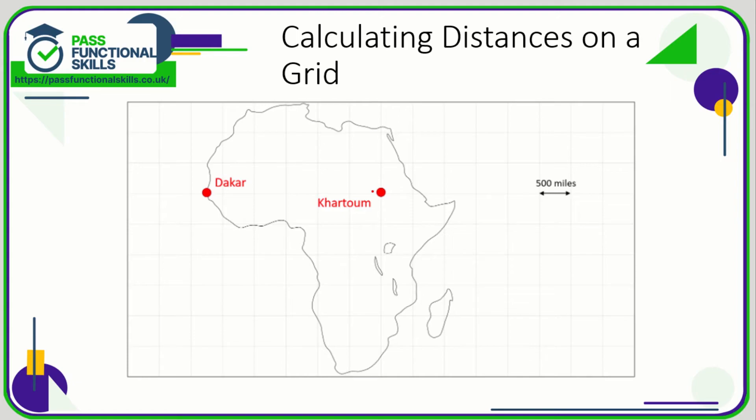You also might have to calculate distances on a grid, so we know that each grid square is 500 miles. So we've got to assume that this is half a square and then 1, 2, 3, 4, 5. So that is 5.5 squares, so that's going to be 5.5 multiplied by 500, and 5.5 times 500 is 2,750. So therefore from Dakar to Khartoum is a distance of 2,750 miles.